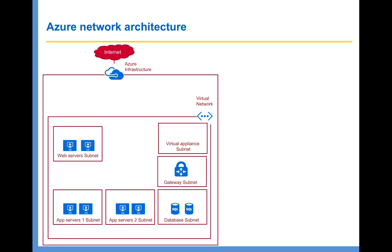Within a Virtual Appliance subnet, you can install any third-party virtual appliances — for example, a firewall. One key thing to remember is that all the Azure resources installed in a particular virtual network can talk to each other by default using system routes. I haven't depicted that in this diagram, because if I start showing those links, the diagram will get complicated. So please remember any resources in a virtual network can talk to each other by default.